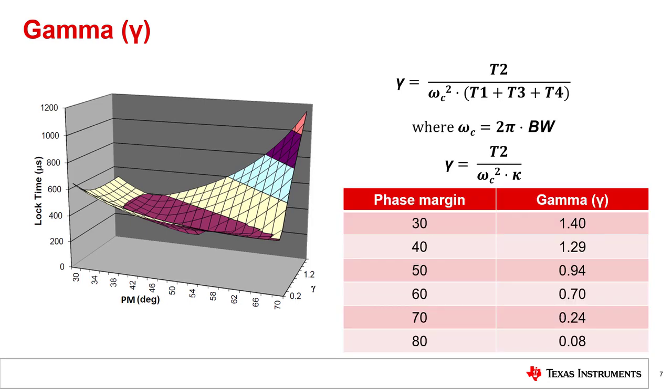The recommendations for gamma and phase margin can be generalized as shown in this table. Whatever combination of phase margin and gamma is optimal for one loop bandwidth will be also optimal for another.